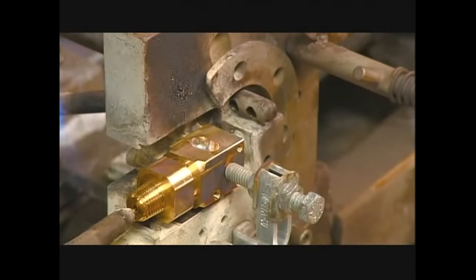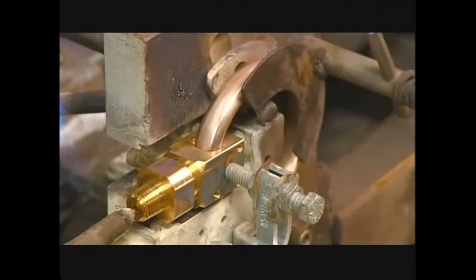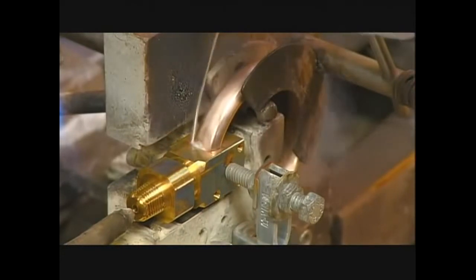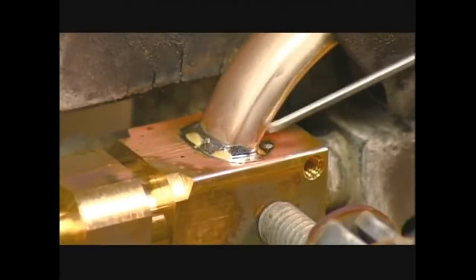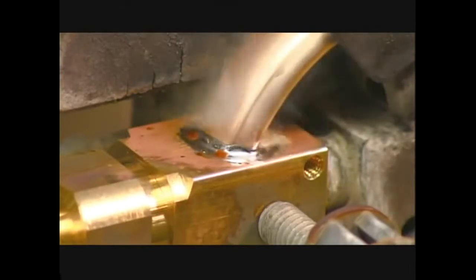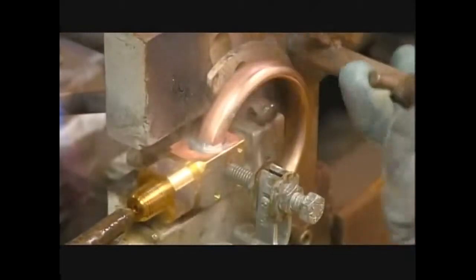He melts zinc solder in the connector's receptacle and mounts the bourdon tube in the correct position. He fills the gap between the connector and the bourdon tube with solder. Then he flushes the heated piece with water to cool it down, sealing the tube in place.